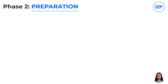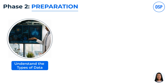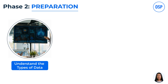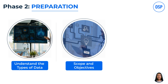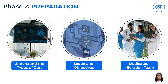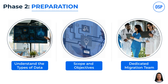Phase 2 is Preparation. The first step is assessing your current data systems — understand the types of data you have, where it's stored, and how it's currently used. Conduct a thorough inventory of all data sources and systems involved. Next, define the scope and objectives of your migration project: what specific data needs to be migrated and what are your success criteria? Form a dedicated migration team including IT specialists, data analysts, and healthcare professionals, with specific roles and responsibilities assigned.